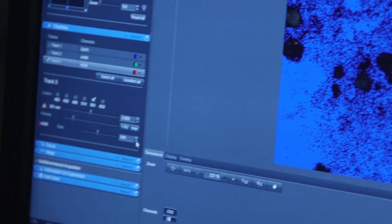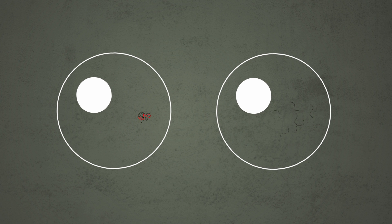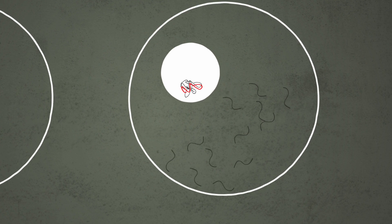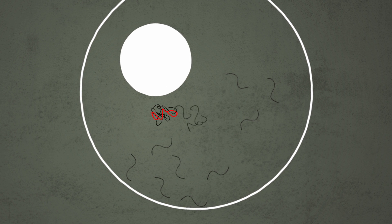Once we found we could reproduce the clumping of TDP-43 in our cells, we extracted this abnormal TDP-43 and added it back into cells expressing healthy TDP-43. We found that this clumping process could speed up dramatically, and this could happen again and again the more we did it.